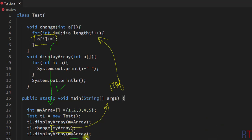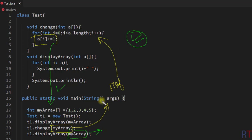That is exactly what is happening here — the change is reflected back to the actual array. This is how we can use an array to achieve call by reference in Java. Hope you understand the concept — we'll see you in the next one, thank you.